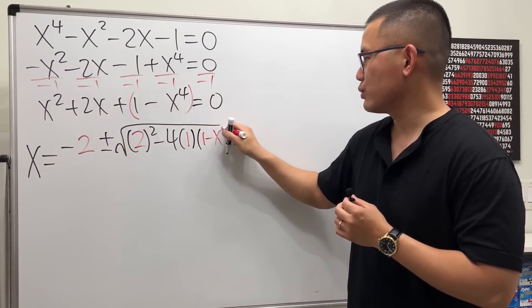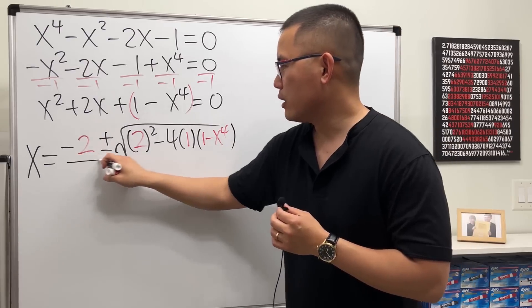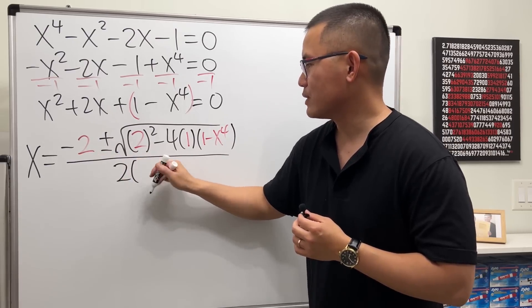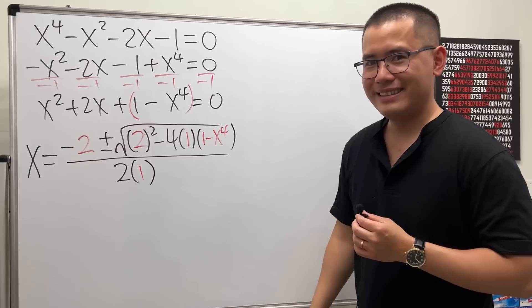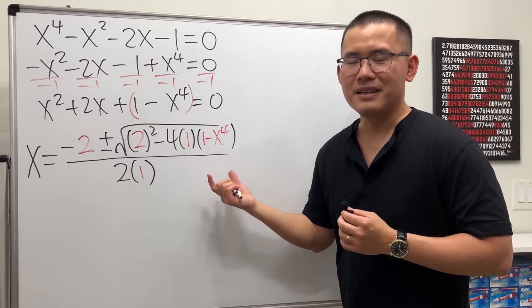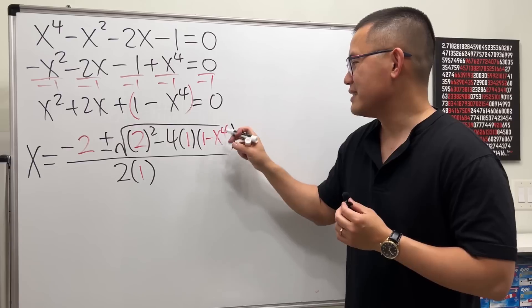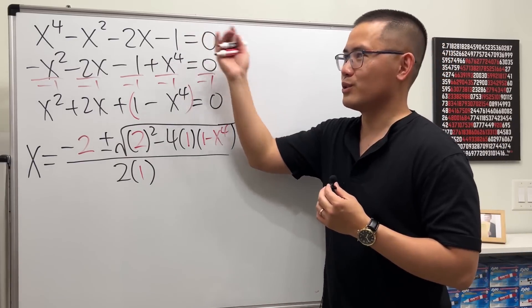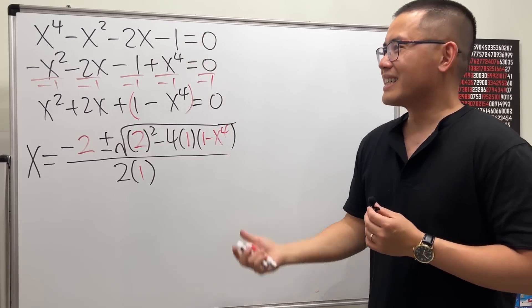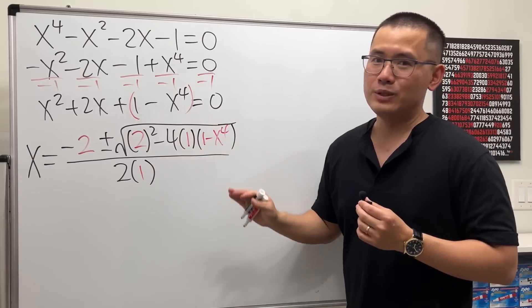So we have 2 squared minus 4, a is 1, and then c is all this which is 1 minus x to the fourth power, and then all divided by 2 times 1. Yes, to be honest, I set this up. This right here simplifies it very, very nicely, so I kind of work backwards to create this.